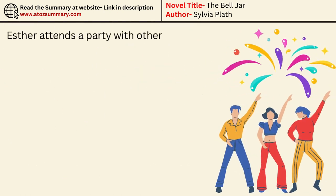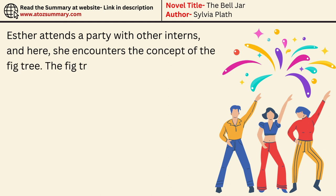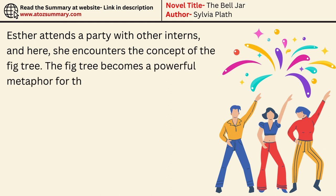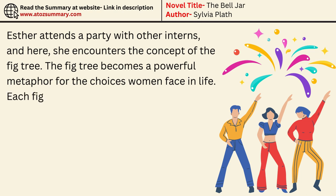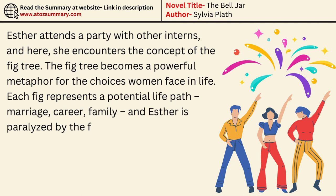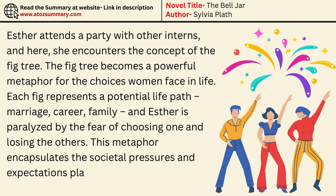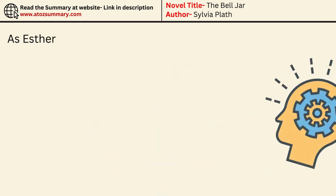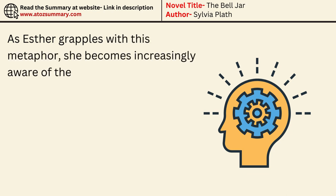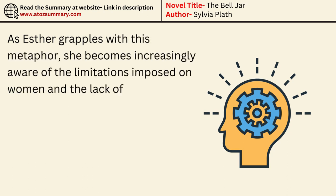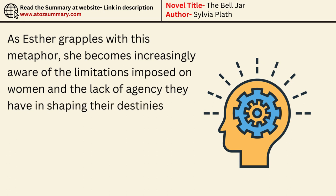Esther attends a party with other interns, and here she encounters the concept of the fig tree. The fig tree becomes a powerful metaphor for the choices women face in life. Each fig represents a potential life path — marriage, career, family — and Esther is paralyzed by the fear of choosing one and losing the others. This metaphor encapsulates the societal pressures and expectations placed on women in the 1950s. As Esther grapples with this metaphor, she becomes increasingly aware of the limitations imposed on women and the lack of agency they have in shaping their destinies.